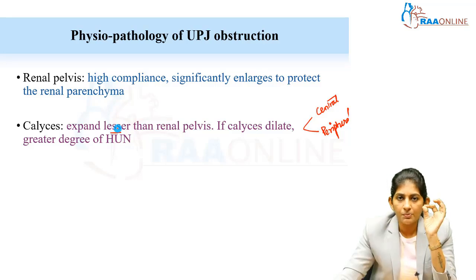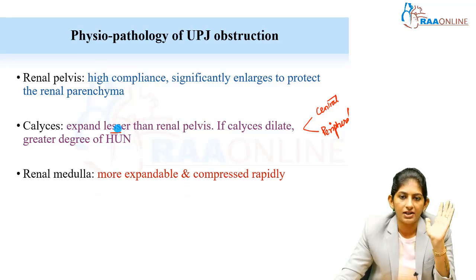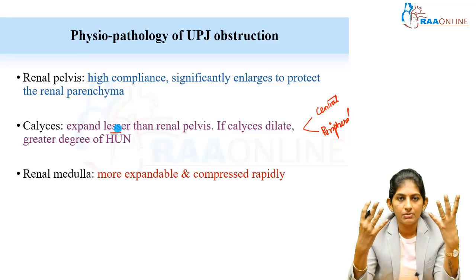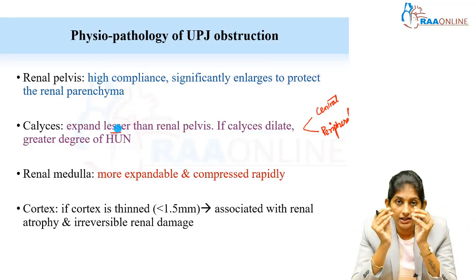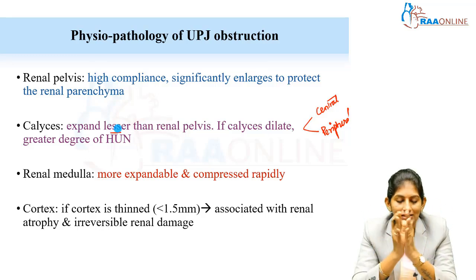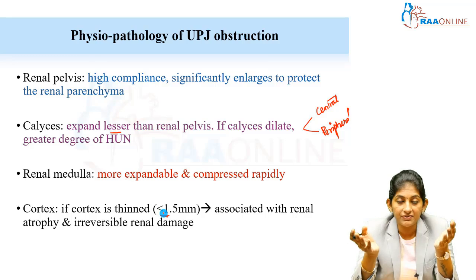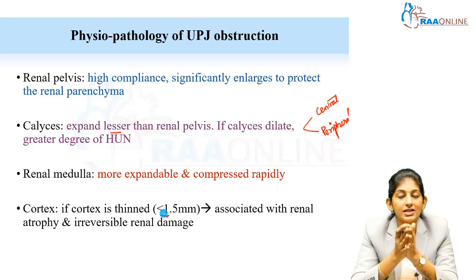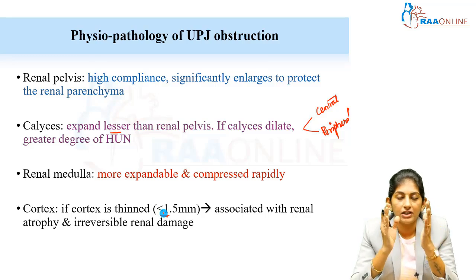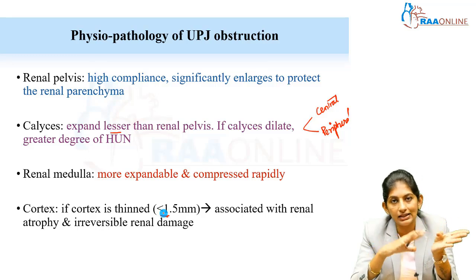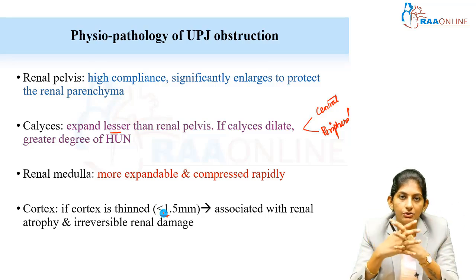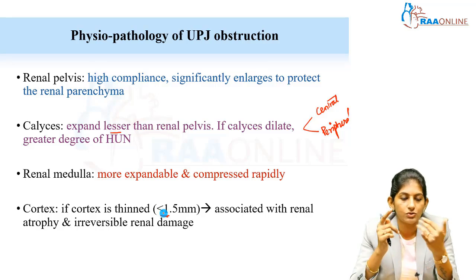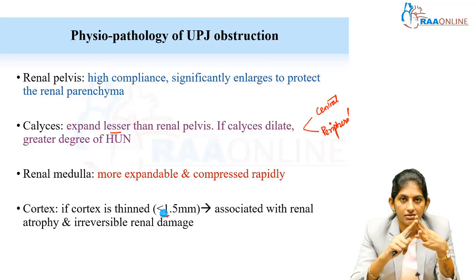Next, we look at the medulla and cortex. The medulla is more expandable and compresses rapidly. The cortex is the last to be compromised — if cortex thinning occurs to less than 1.5 mm, that is associated with atrophy of the renal parenchyma, indicating that irreversible renal damage has already set in. So the four key parameters to assess are: pelvis, calyces, medulla, and cortex.